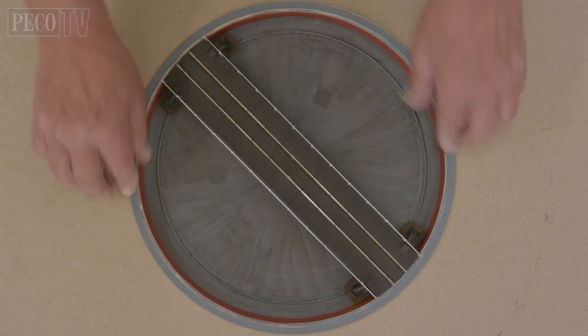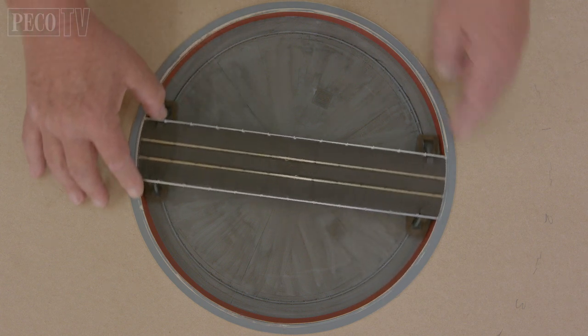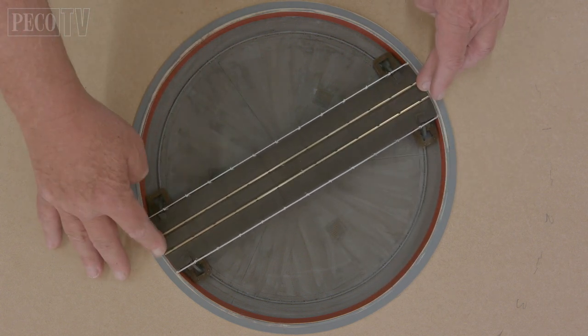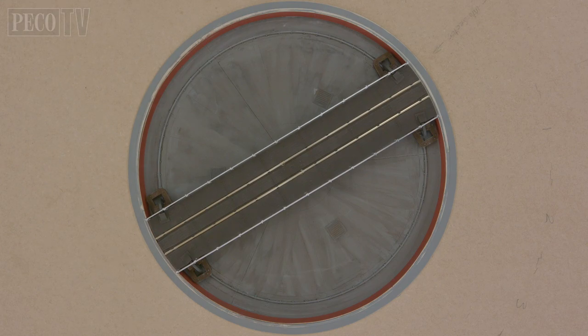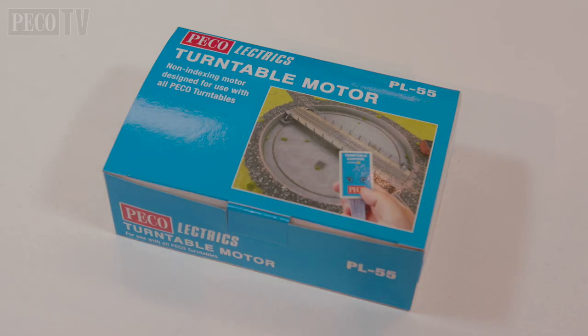In the next film, we will look at fitting the PL55 turntable motor, laying track and wiring for electrical connectivity. We look forward to seeing you for the second part and we hope you enjoyed the first in this two-part special series, all about the Pico LK55 turntable.